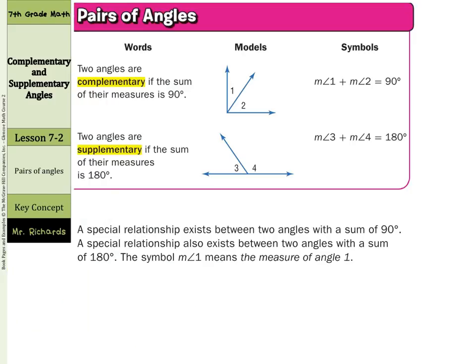Two angles are complementary if the sum of their measures is 90 degrees. So what we just drew was actually a complementary relationship. Two angles are supplementary if the sum of their measures is 180 degrees. So it's all about the relationships.